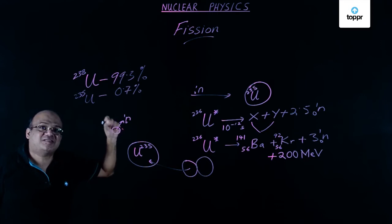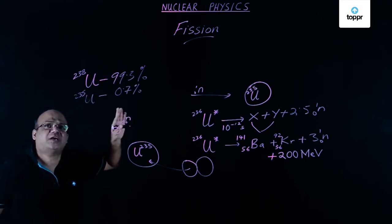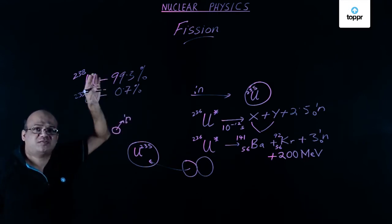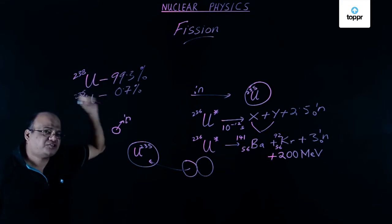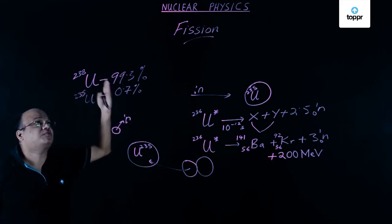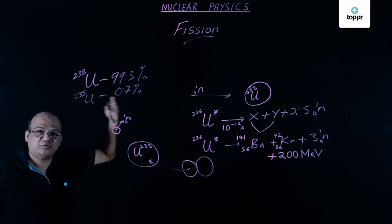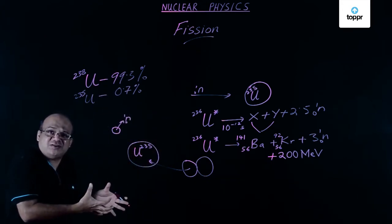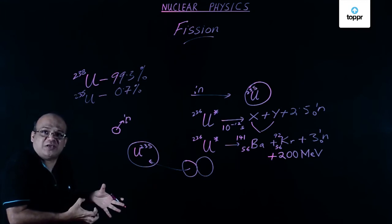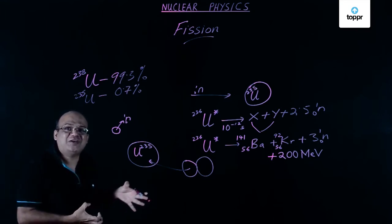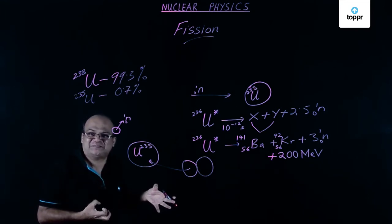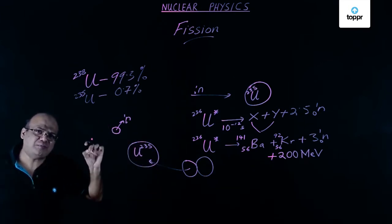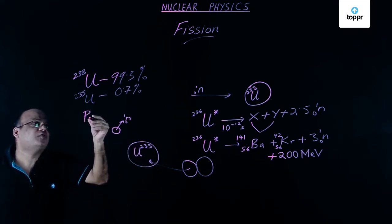Initially when this technology was developed it took a very long time to separate these two isotopes. The first atom bomb, dropped at Hiroshima, was based on uranium-235. For the second atom bomb, they did not have sufficient enriched uranium, so it was based on plutonium-239. Plutonium-239 also fissions with slow neutrons.